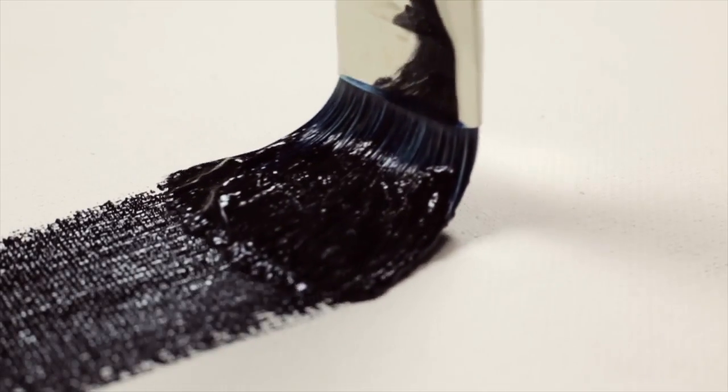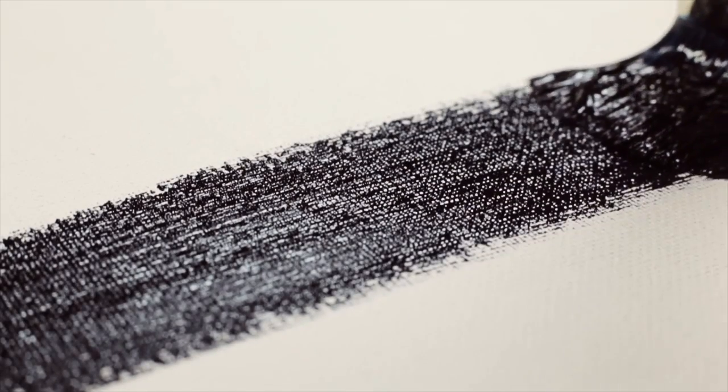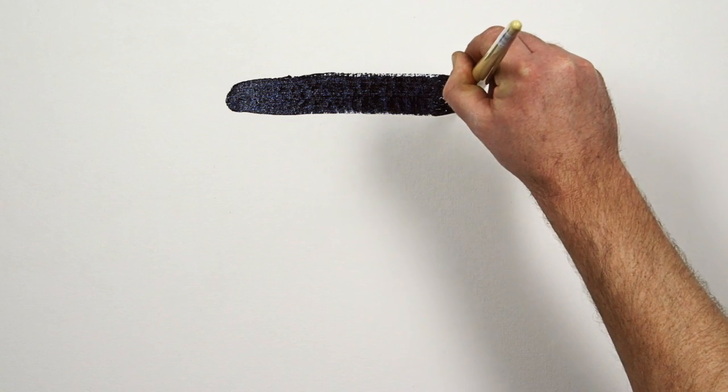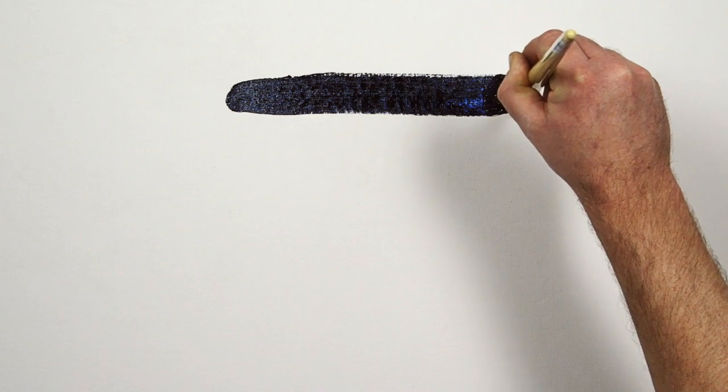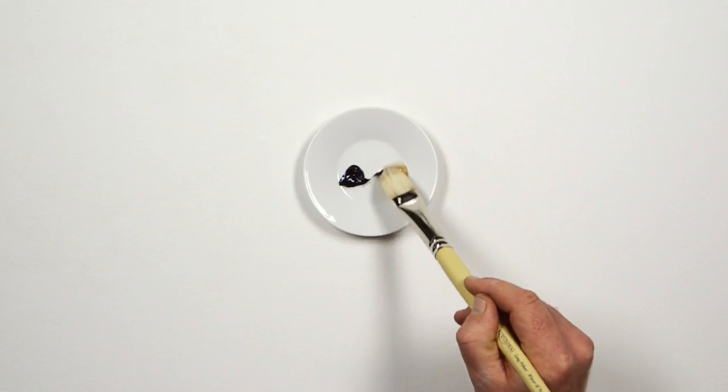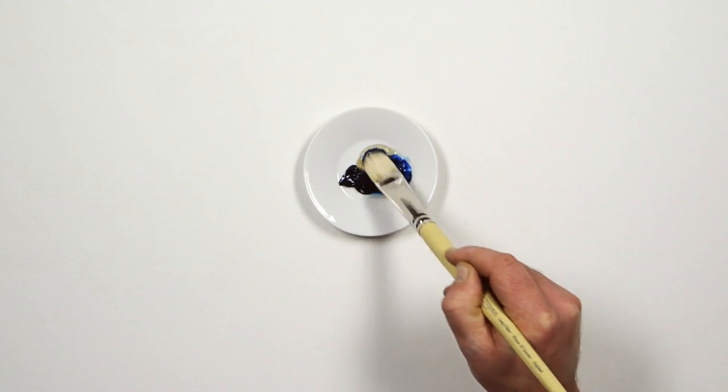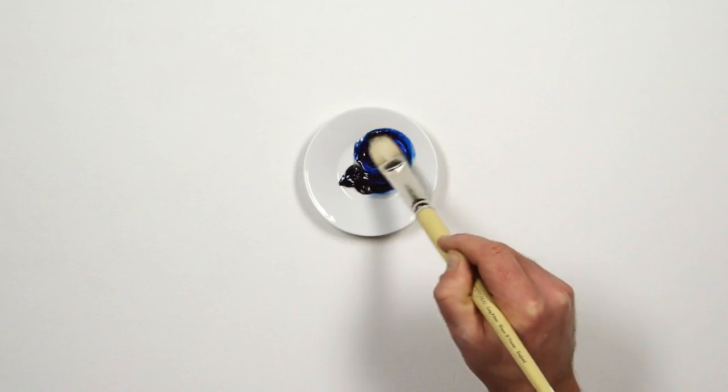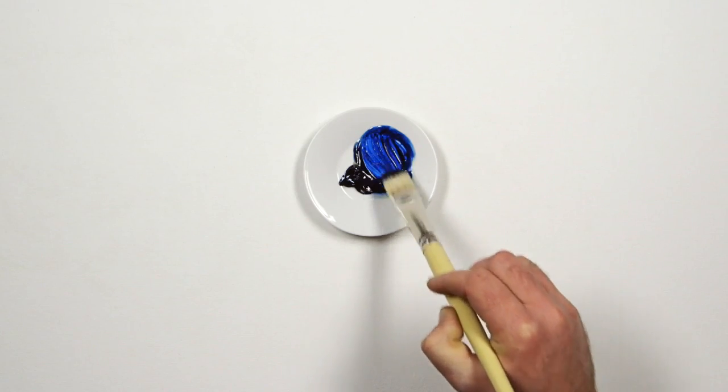When I apply it to the canvas you will notice the deep mass tone. Prussian blue has the highest light fastness rating and because of its transparency it's very useful in glazing.